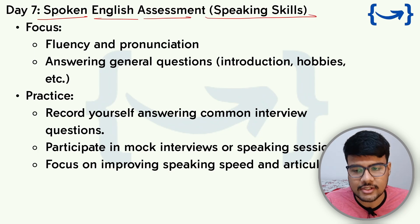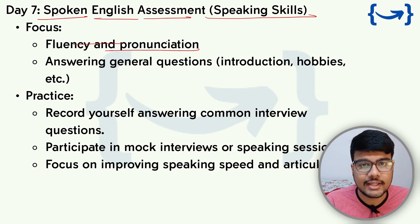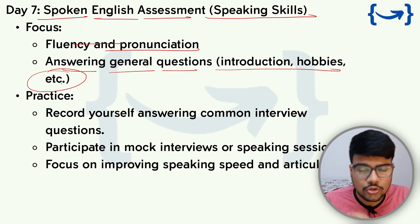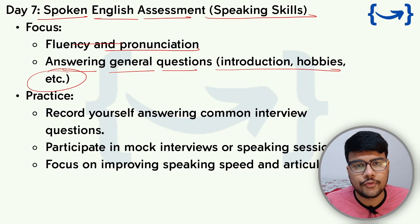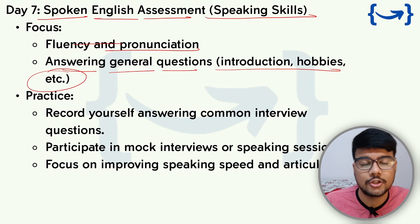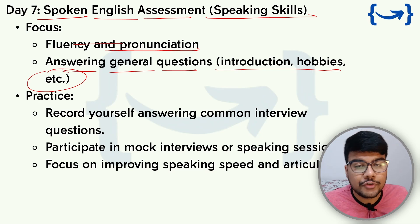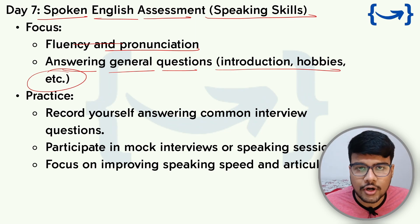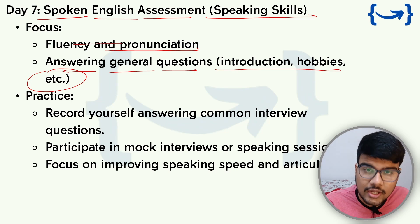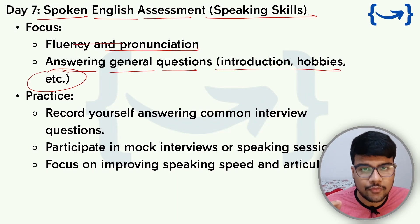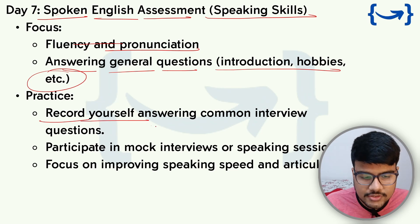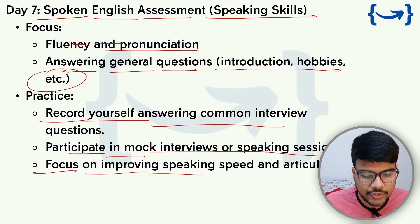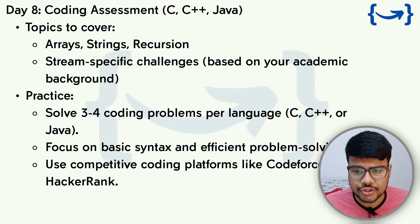Day 7 is Spoken English Assessment — Speaking Skills. Fluency and pronunciation play an important part. You'll answer general questions about introductions, hobbies, and extracts — for example, describing a social event or talking about your habits for two to three minutes. Build a strong vocabulary so your sentences sound good. Practice by recording yourself answering common interview questions, participating in mock interviews or speaking sessions, and focusing on improving speaking speed and articulation.